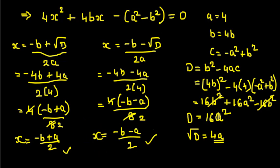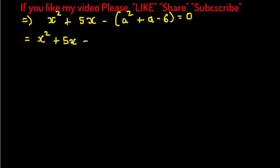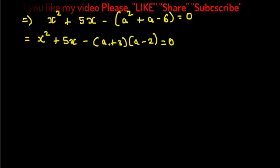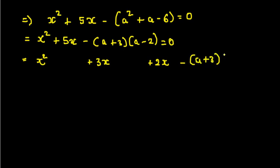Now moving to question number two. I prefer the discriminant method but will solve by both methods. The equation is x² + 5x minus (a² minus a minus 6). I can directly see the factors of the constant term: minus 6 comes from minus 3 times plus 2, so the factors will be (a plus 3)(a minus 2). Using splitting the middle term, write 5x as 3x plus 2x.